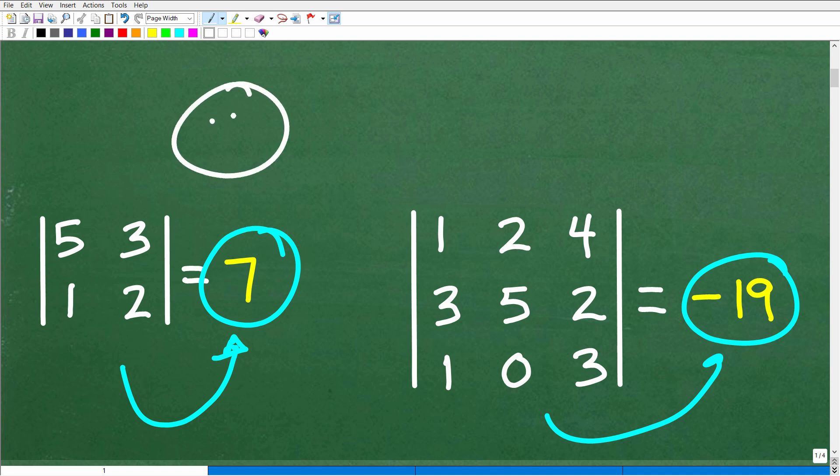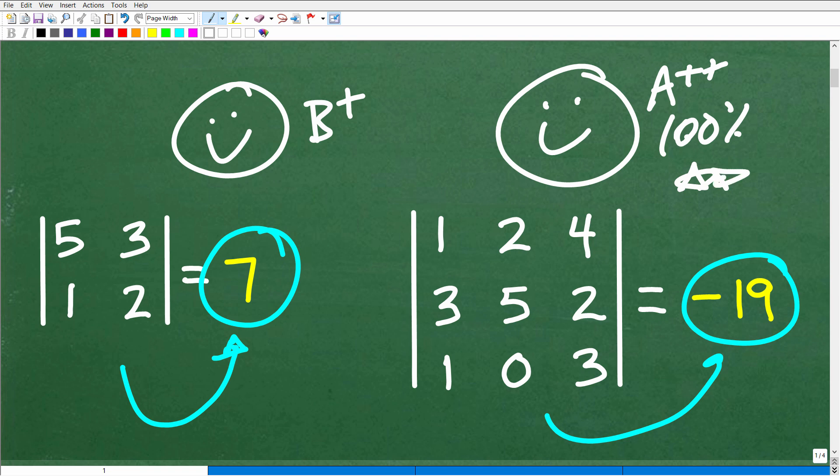If you got both of these problems correct - let's say you knew how to do the 2 by 2, we'll give you a nice little happy face, and I'm going to give you a B plus because it's super easy to do. But if you were able to get this 3 by 3 right, I'm going to give you a big old happy face, an A plus plus, a 100% and multiple stars. So you can tell your friends and family that you certainly understand how to calculate the determinant of various matrices.